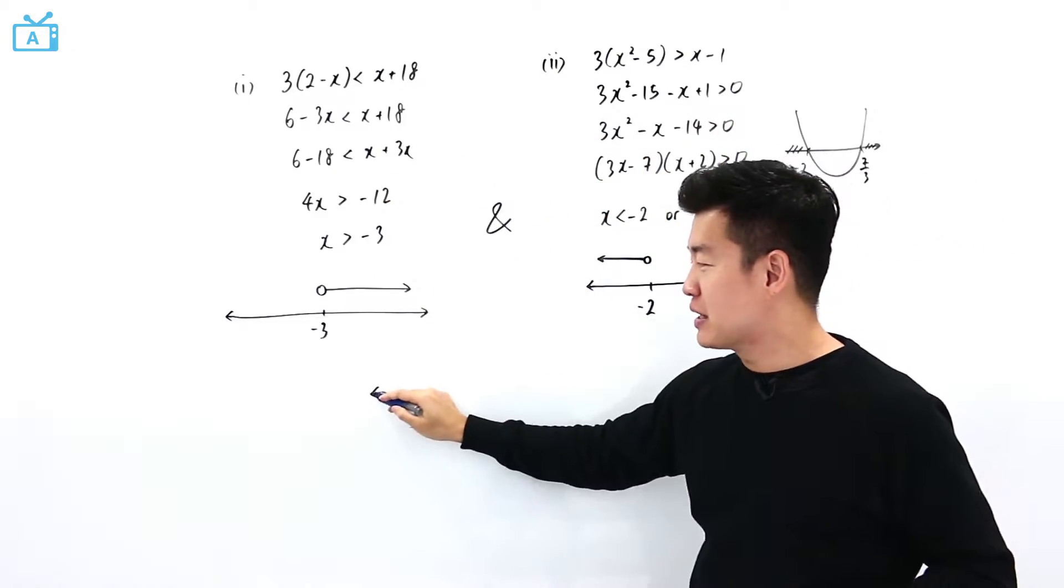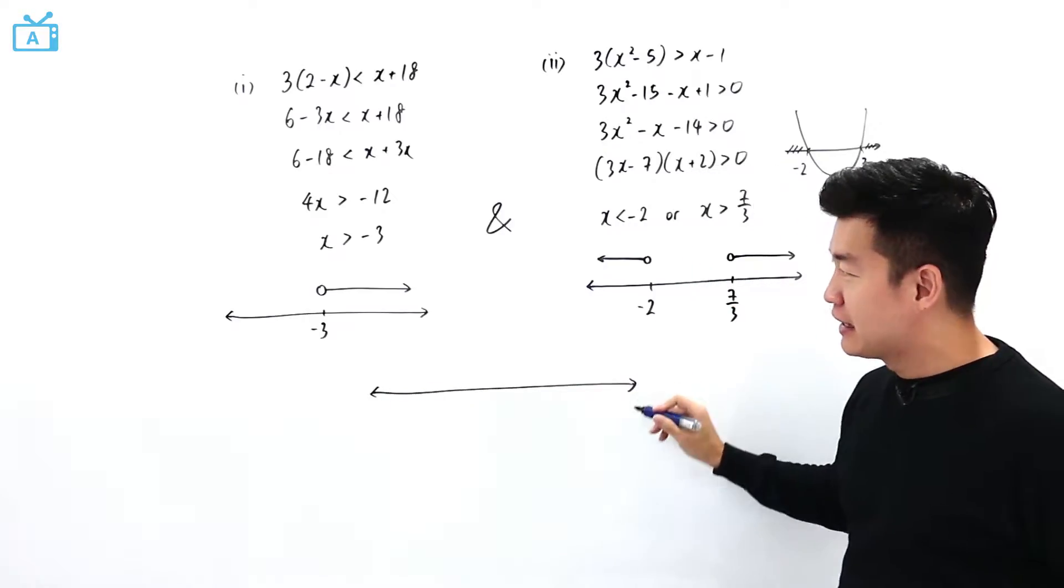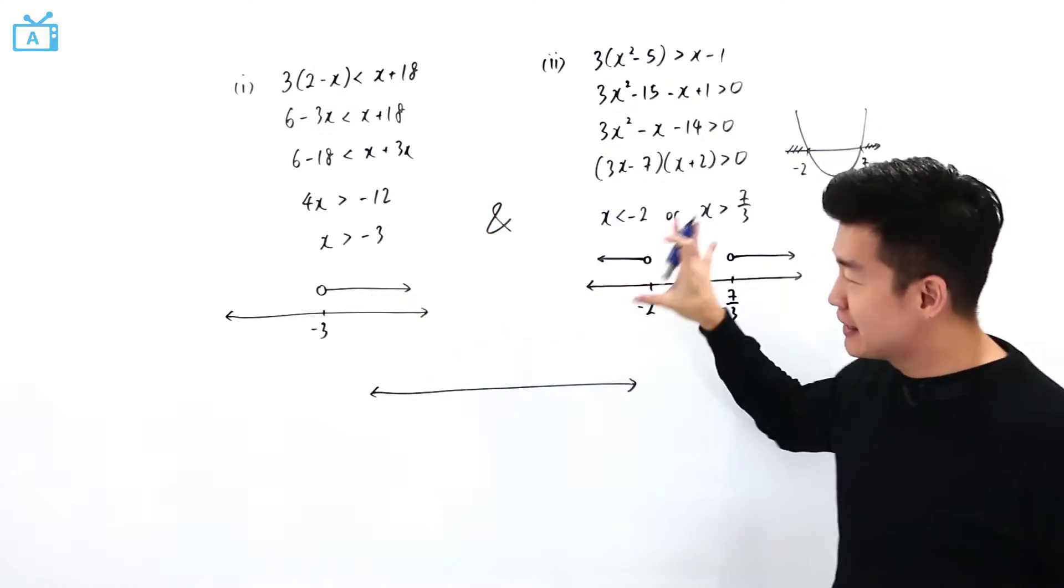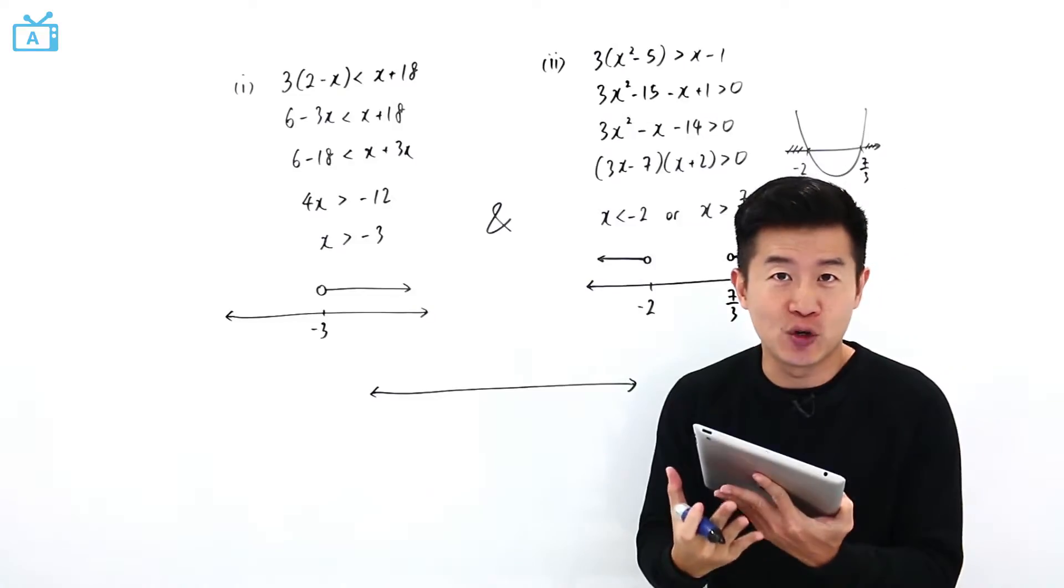So what we can do is to imagine another number line that consists of this solution and this solution. And what we want to do is to find the overlapping region.